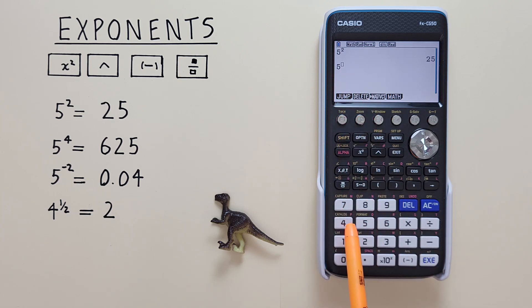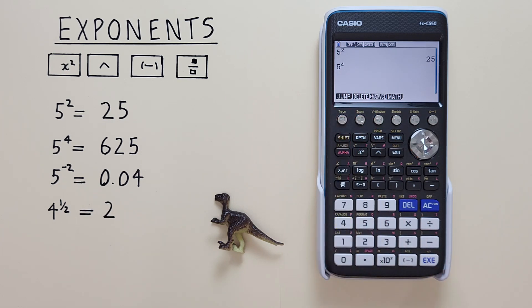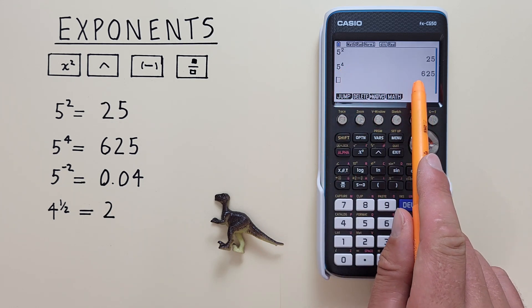And then we put in 4, and hit exe, and we see we get 5 to the power of 4 is equal to 625.